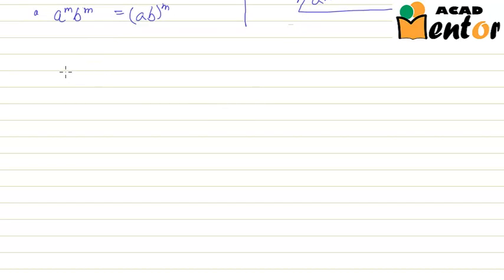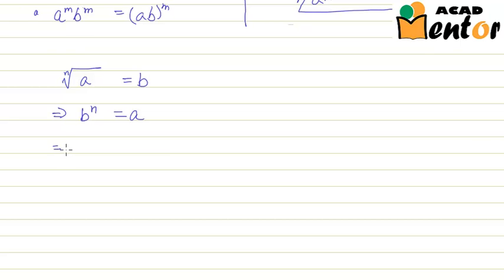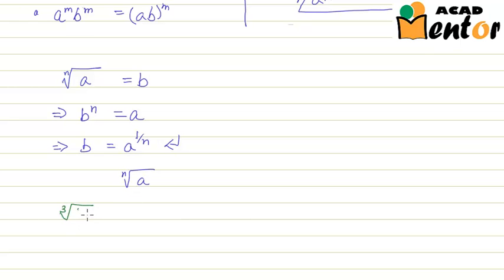Now let us look at how we represent the root of a number. Say the nth root of a is equal to b. That simply means b to the power n is nothing but a. We can also write b in the form of a to the power 1 by n. This is just another representation of the nth root of a. For example, cube root of 2 would be equal to 2 to the power 1 by 3.